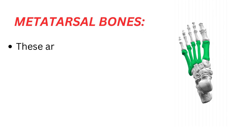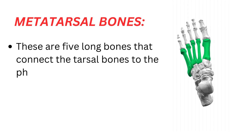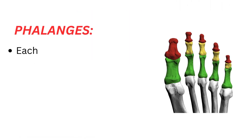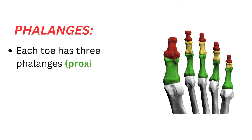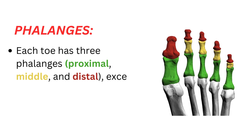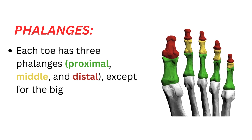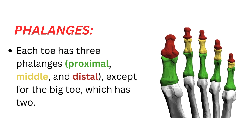Metatarsal bones. These are five long bones that connect the tarsal bones to the phalanges. Phalanges: each toe has three phalanges — proximal, middle, and distal — except for the big toe, which has two.